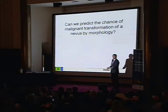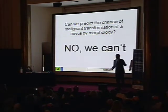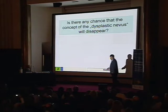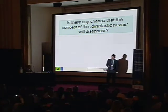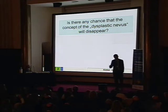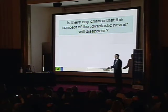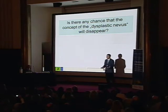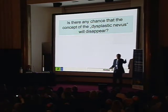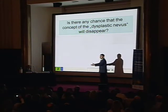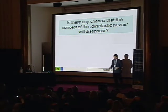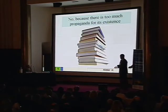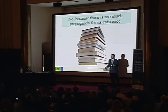So can we predict the chance of malignant transformation of a nevus by morphology? No, we can't. Is there any chance that, given all these arguments, the concept of the dysplastic nevus will disappear? There is no chance. Why? Because if you read a textbook in dermatology, it's everywhere. It will change slowly, like dyshydrotic eczema, like mycosis fungoides — all misnomers. Unfortunately we cannot change those anymore, but it's still time to change dysplastic nevus and atypical nevus. I know there is too much propaganda for its existence.